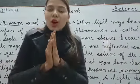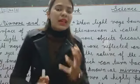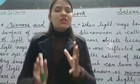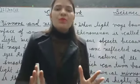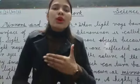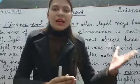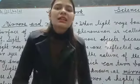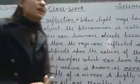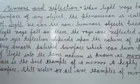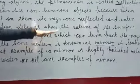All objects reflect light, jitne bhi objects hain wo reflect karte hain light ko. But smooth surface wale objects — they reflect light better than other objects. Wo zyada reflection ko zyada badhawa dete hain, ya phir zyada reflection dikhate hain jinka surface smooth hota hai.